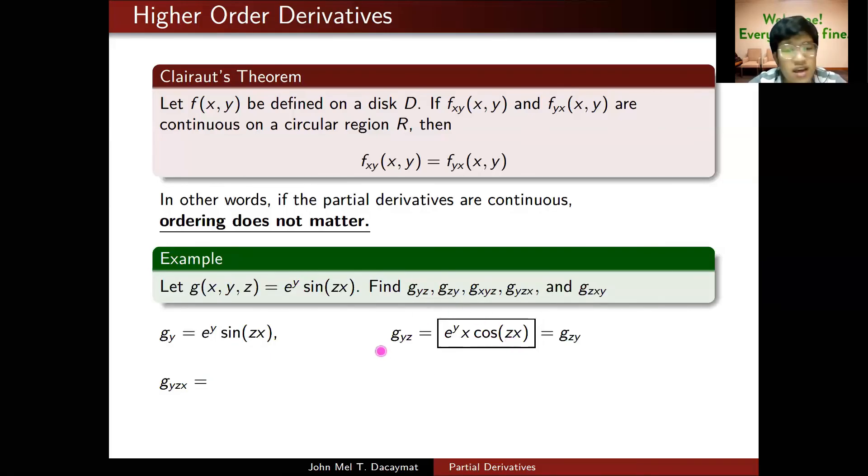We've computed g sub yz, so I'll take the partial with respect to x. I need to use product rule. Copy the first times derivative of the second—derivative of cosine is negative sine—so derivative of zx with respect to x is z. Plus, derivative of the first: e to the y is constant, so the derivative is just e to the y times copy the second. Simplifying, I moved the negative here and combined the z with x. Since this is g sub yzx but also g sub xyz and g sub zxy, I'm done.